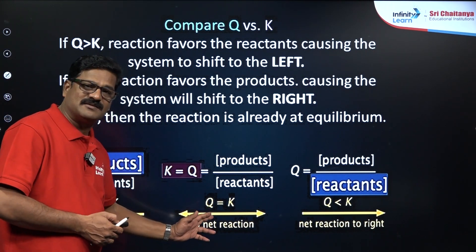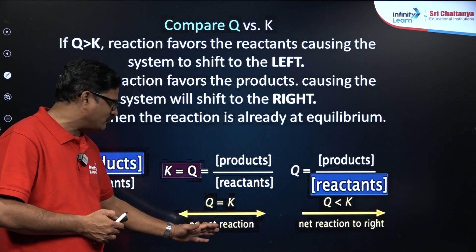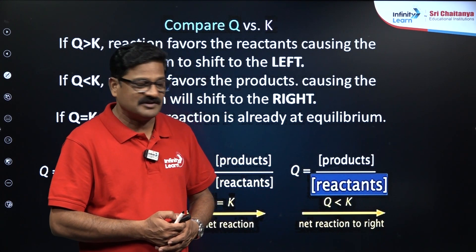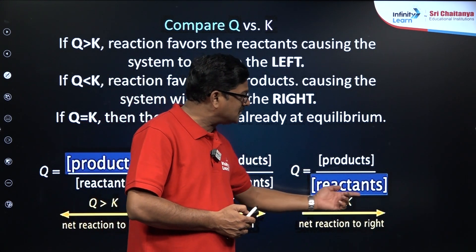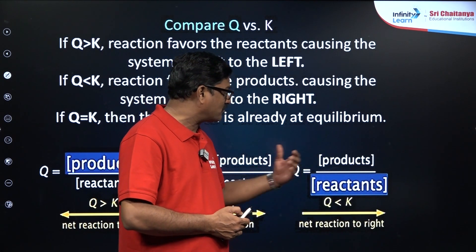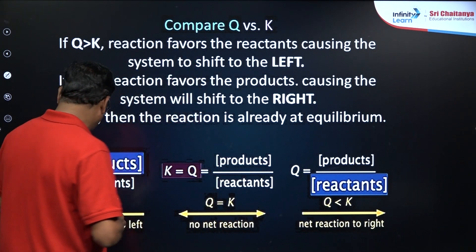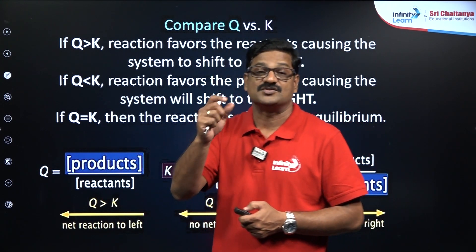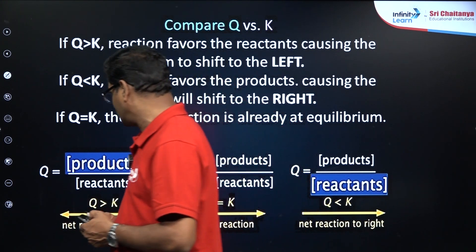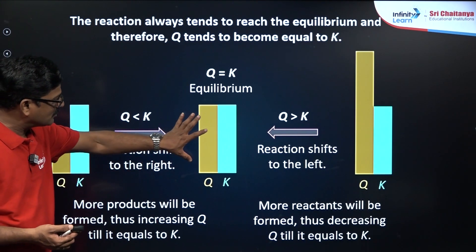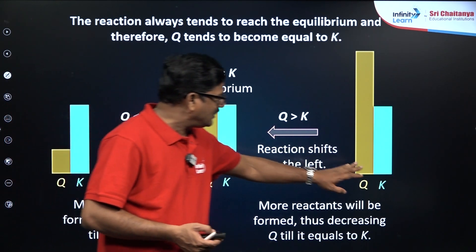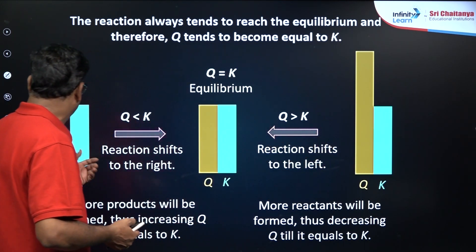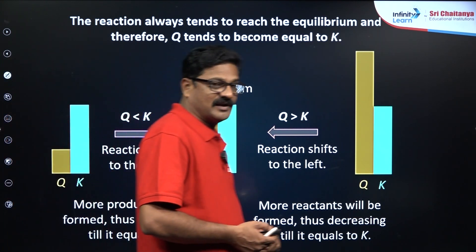If Q equals KC, the reaction is at equilibrium — no net reaction is visible. When K is greater than Q, the net reaction moves to the right so that more reactants are converted into products, meaning reactant concentration is higher. If Q is greater than K, the reaction moves in the backward direction, and product concentration is higher. When K is less than Q, equilibrium shifts to the left; when K is greater than Q, the reaction shifts to the right.